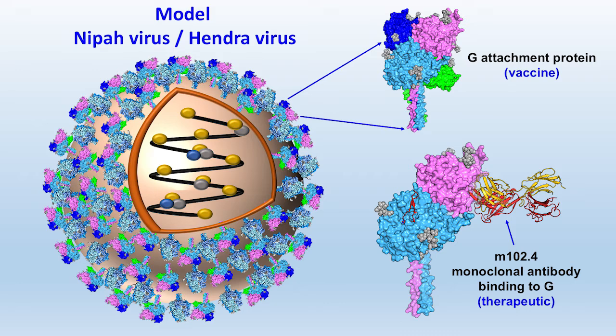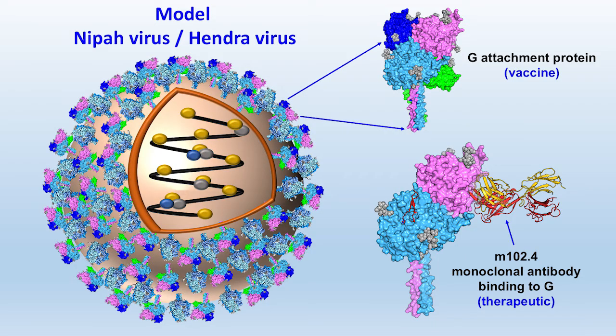The virus particle itself is an enveloped virus, and the particle contains important protein spikes on the surface. One in particular that we have been studying is the G-attachment glycoprotein, or the G-protein. That is how the virus attaches to receptors known as ephrins on the surface of cells. We engineered this protein as a subunit vaccine about 15 years ago. We also engineered and raised a human monoclonal antibody known as M102.4, which binds to the G-protein and can block the receptor attachment event and prevent virus infection.